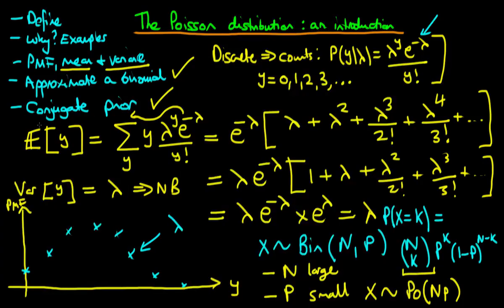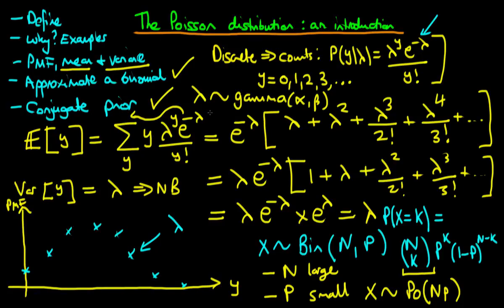Finally, the conjugate prior for a Poisson distribution is a gamma distribution on lambda with parameters alpha and beta. We will prove this in later videos. When we have a gamma prior on lambda and a Poisson likelihood, the posterior distribution is itself a gamma distribution.